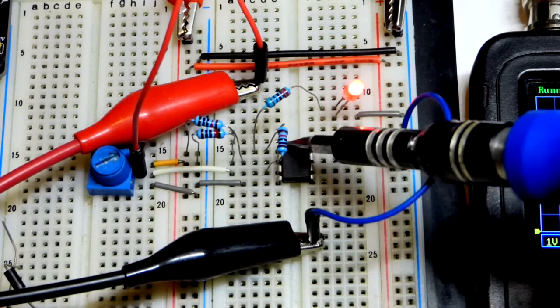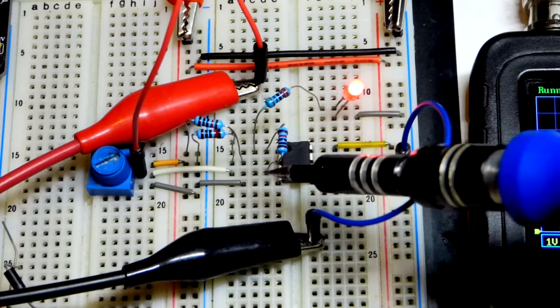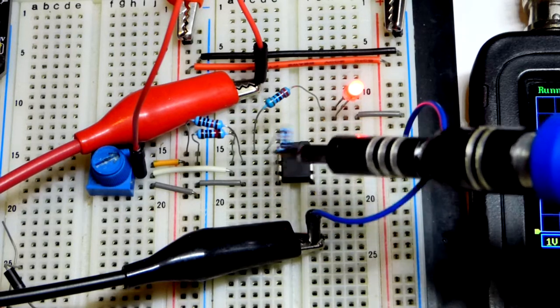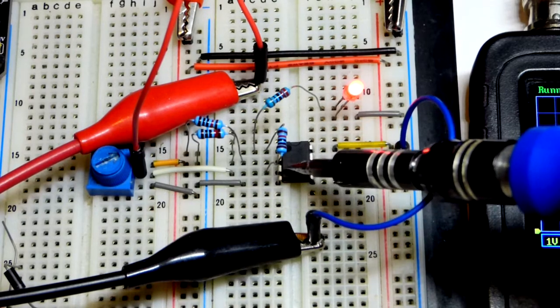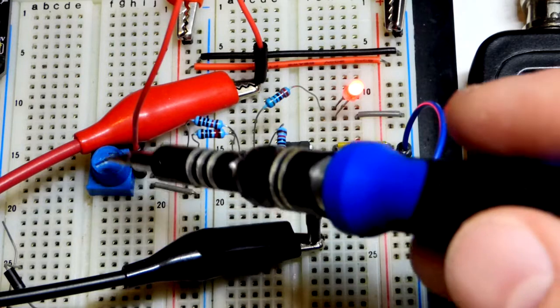So what that does, it pulls the voltage closer to what the output is right there. So 10 kilohm resistor that I'm using because I want a lot of hysteresis for this video so we can see it.